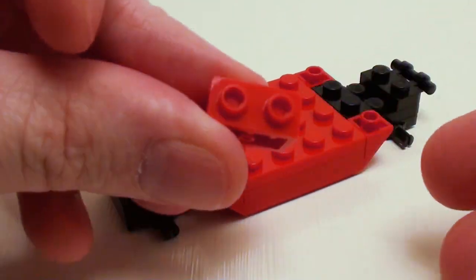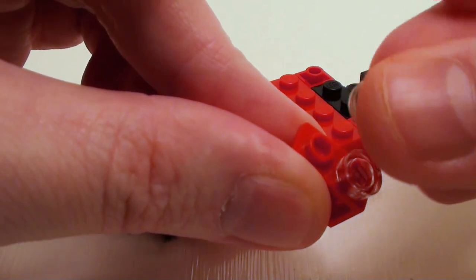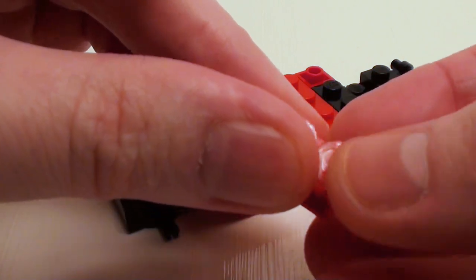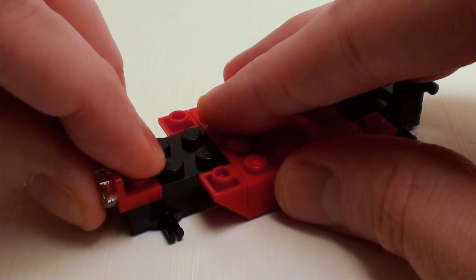I want to add a set of headlights in the front, so I'm going to take a 1 by 2 by 1 by 2 upwards angular plate and a set of transparent clear round flat tiles. Set these on the face of the angular plate. Let's set that down right there.